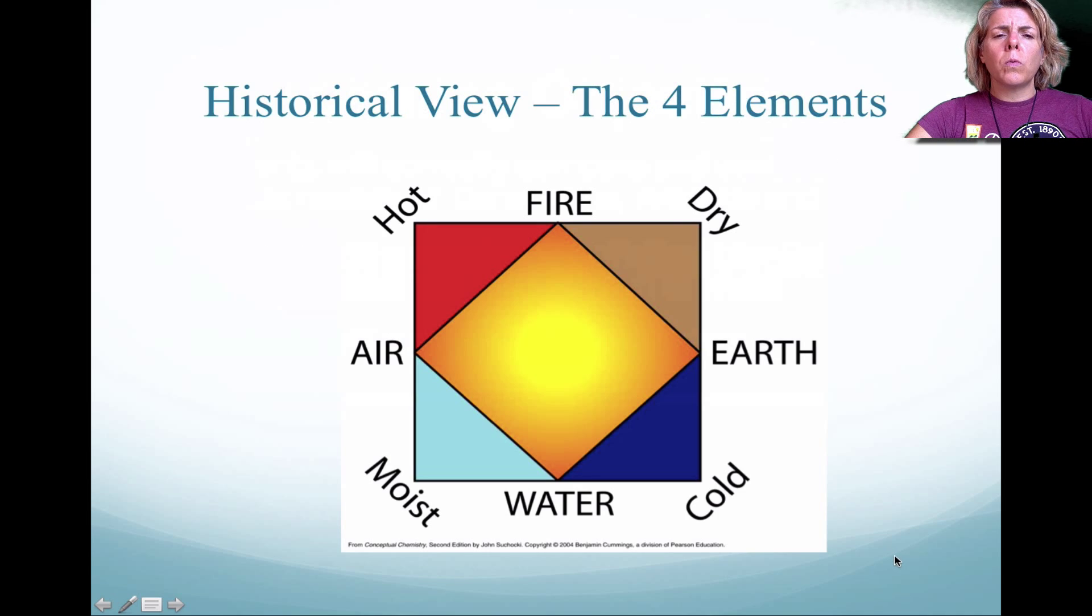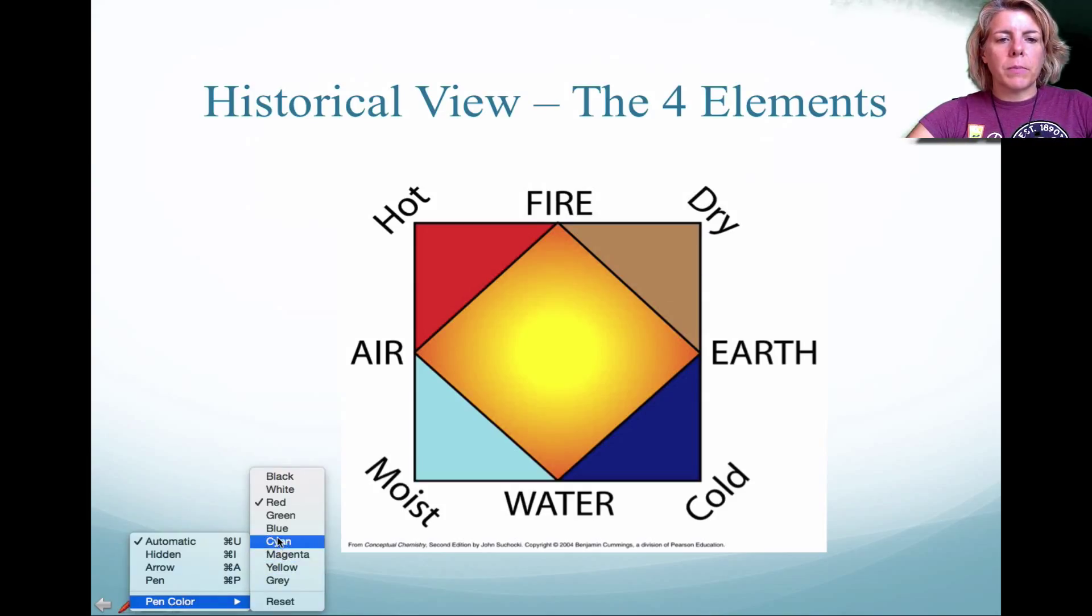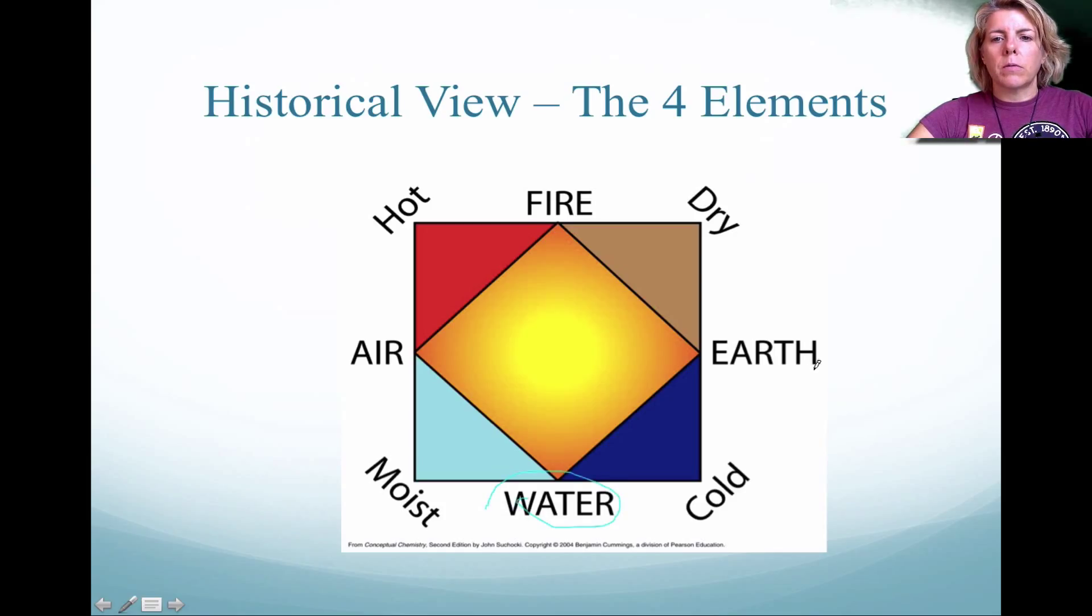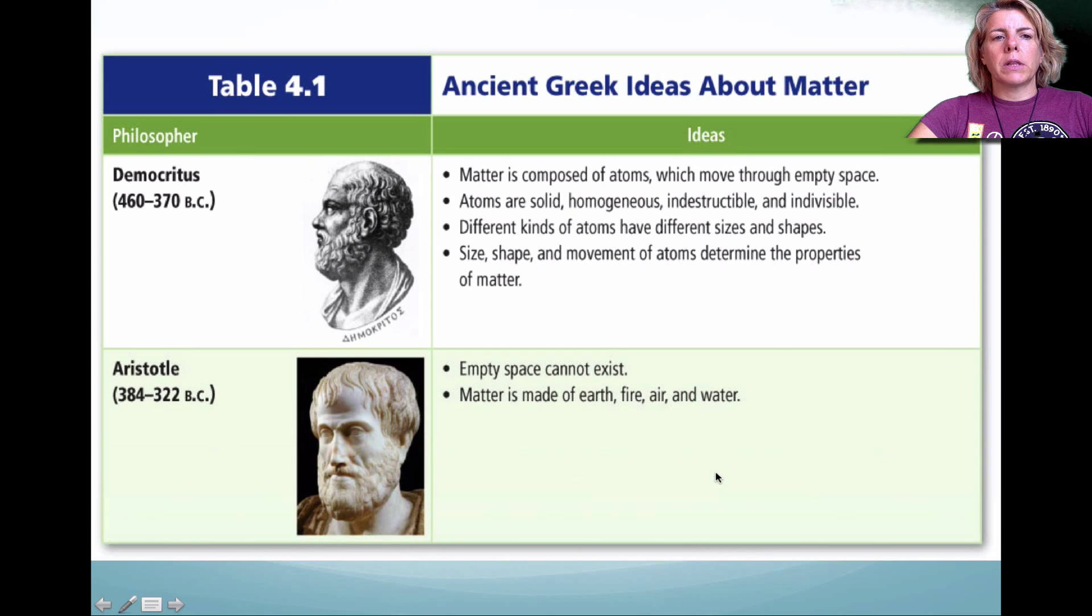In the times of the Greeks, they were trying to figure out what matter is. They used their own world to help come up with ideas about matter. The Greeks looked at four types of matter: water, earth, fire, and air. If you combine air and water, you get moist matter. If you combine water with earth, you get cold matter. They had some very distinct ideas about matter. Of course, there was a problem with that idea, but let's talk about it.